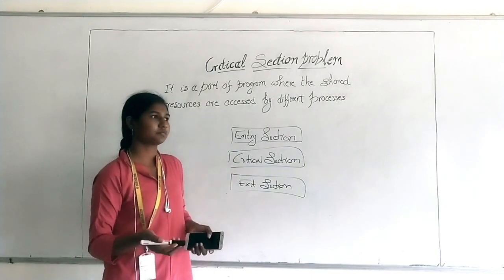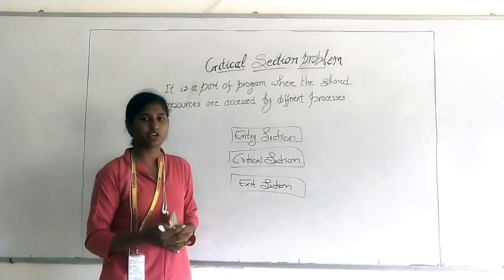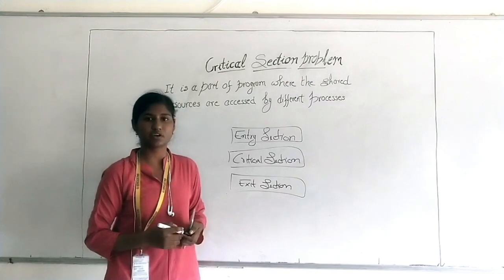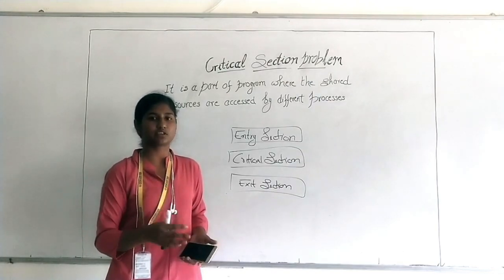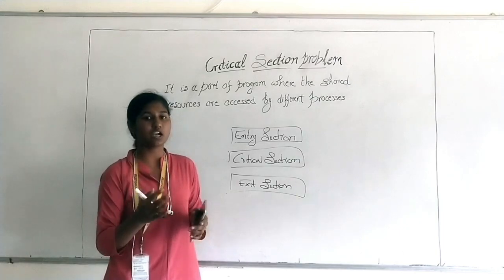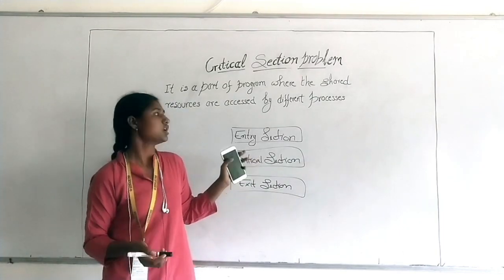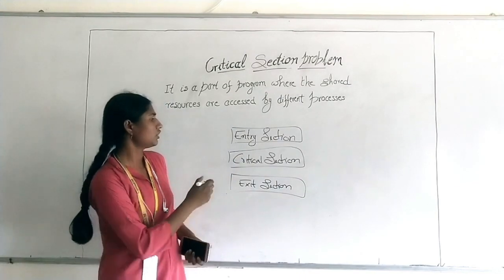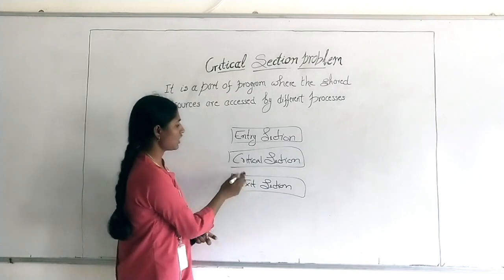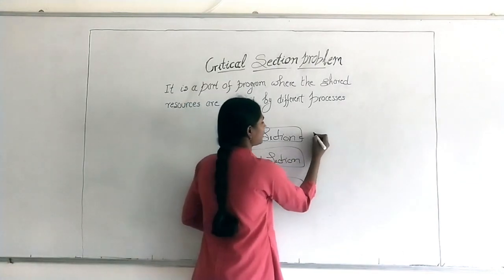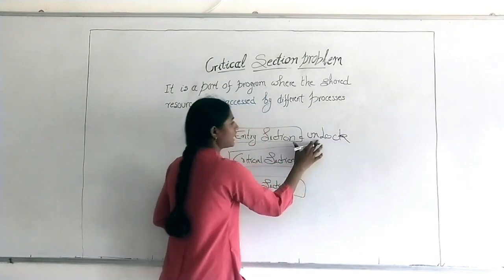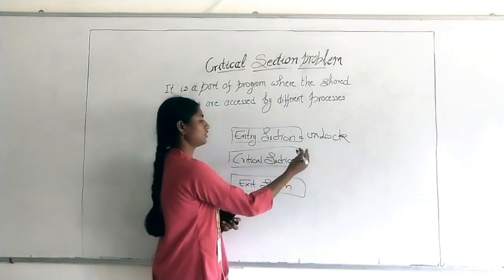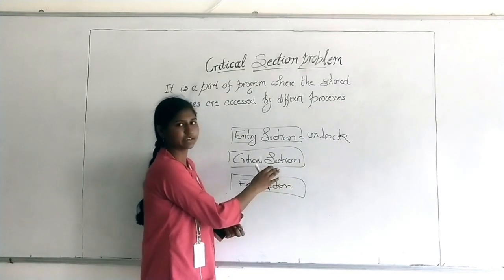For example, if you are entering your room, that room is your critical section. You have some resources and you want to go inside. How will you go? Until you unlock your critical section — that room — you cannot go in. First you have to enter into the entry section, then only you can enter your room. When you go out, this is called the unlock portion — you unlock the critical section.